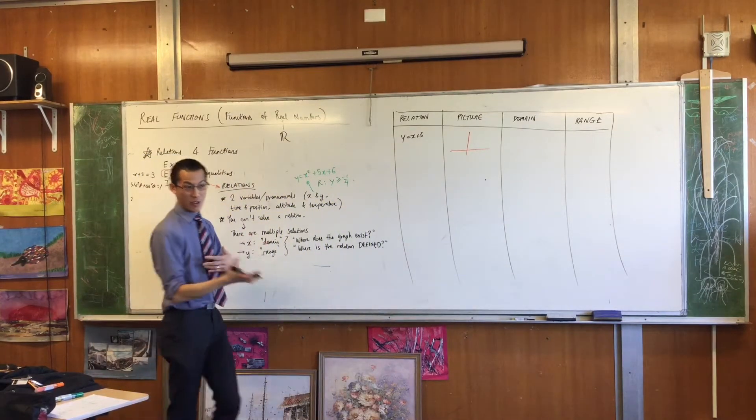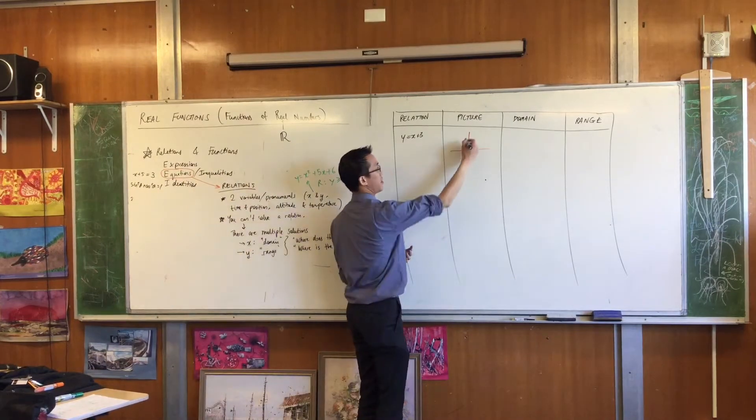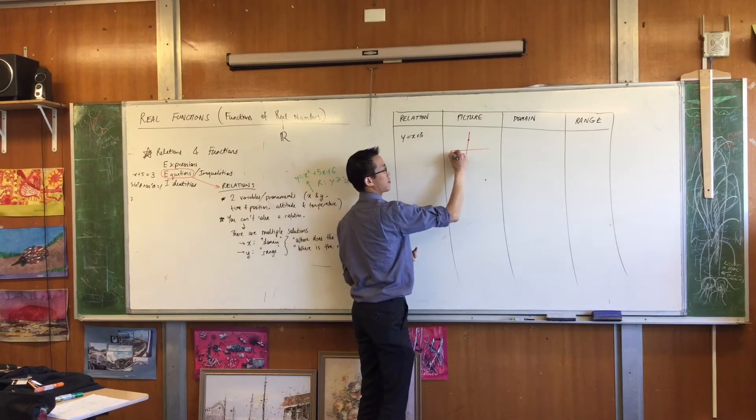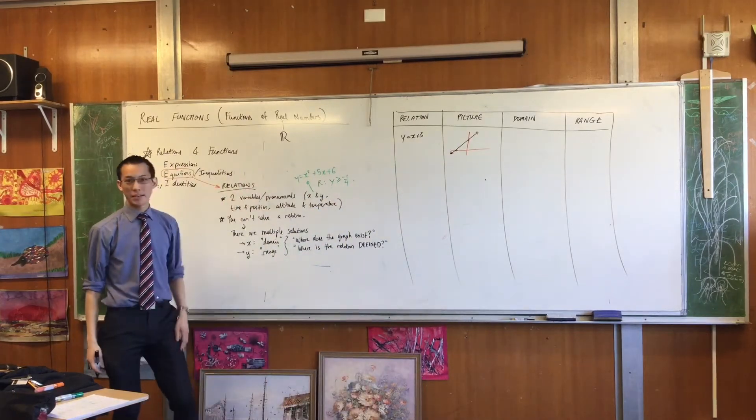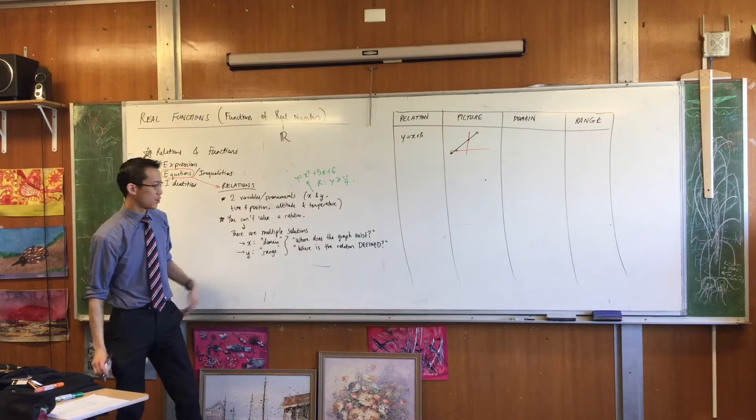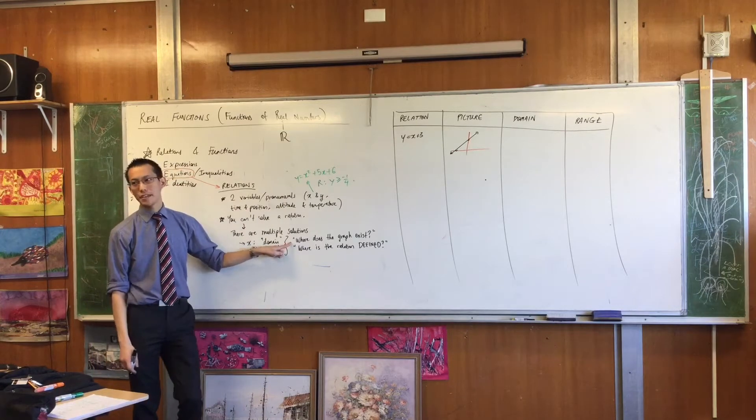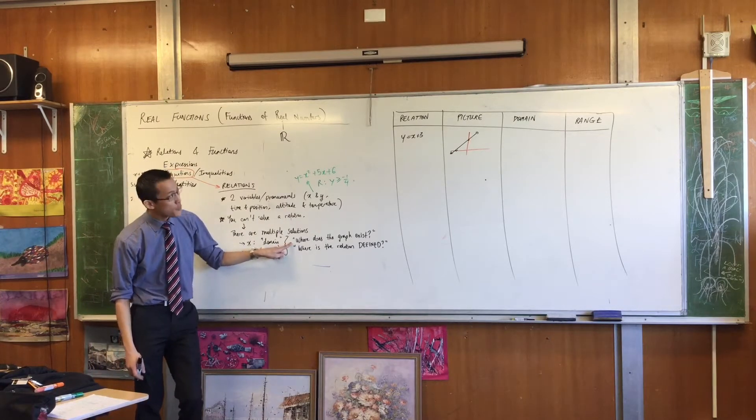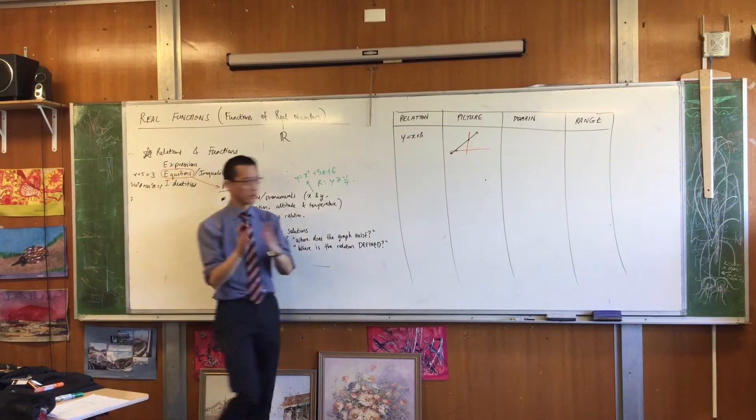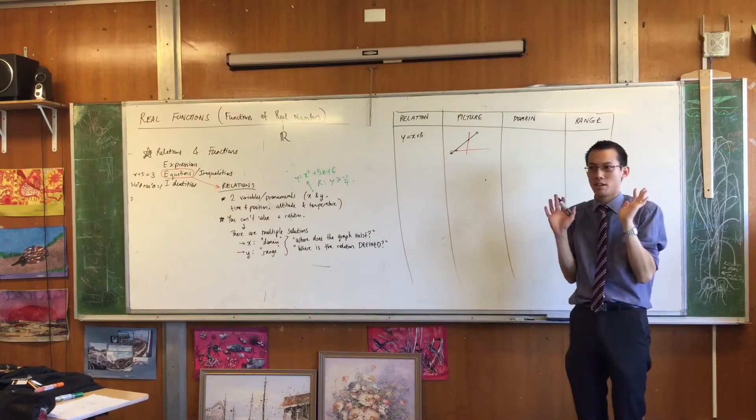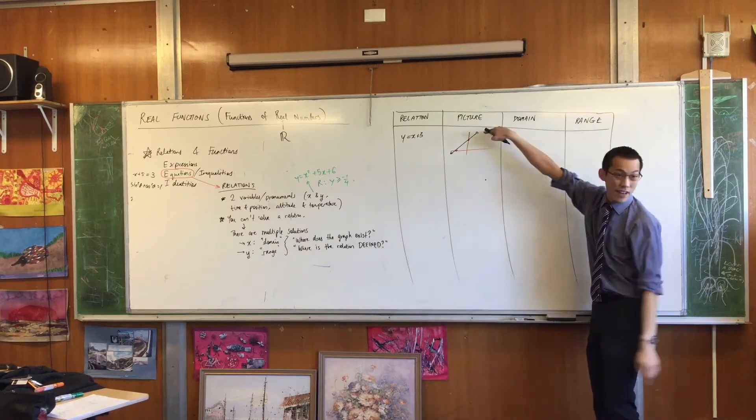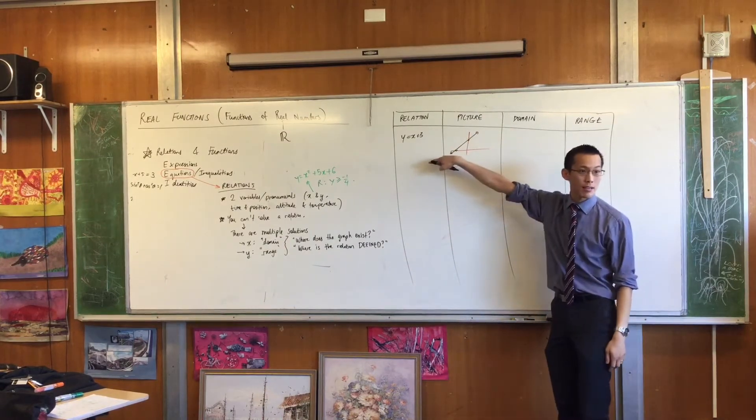It's a straight line. Its intercepts are at 3 and negative 3. There's the function. Don't even bother labeling it. Let's think about domain and range. Where does this graph exist? For domain, for x values, is there any x value where it stops, where it's like I can't go there, not allowed? No, it could just keep on going. That's why I have arrows. This side and this side. It goes on forever.